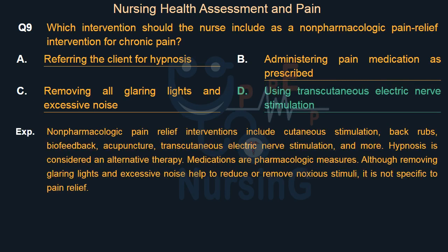Non-pharmacologic pain relief interventions include cutaneous stimulation, back rubs, biofeedback, acupuncture, transcutaneous electric nerve stimulation, and more. Hypnosis is considered an alternative therapy. Medications are pharmacologic measures. Although removing glaring lights and excessive noise helps to reduce or remove noxious stimuli, it is not specific to pain relief.